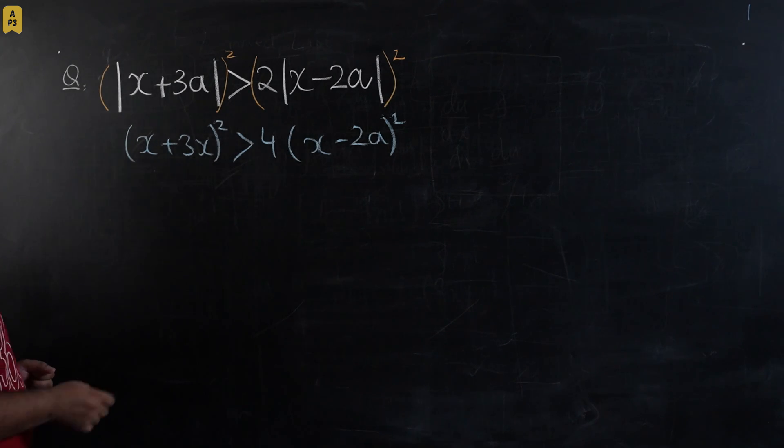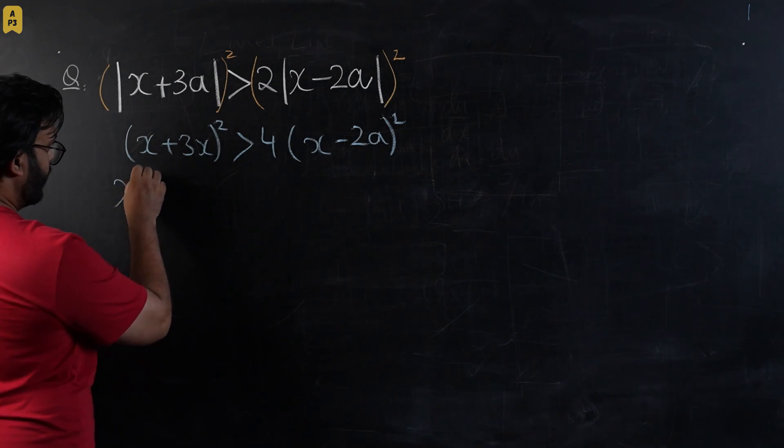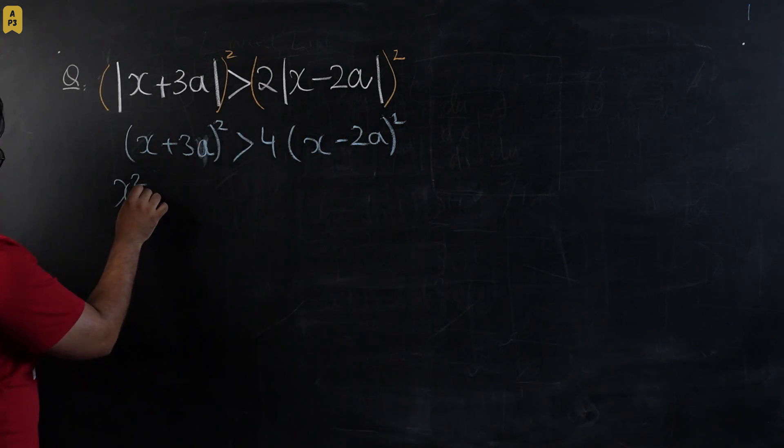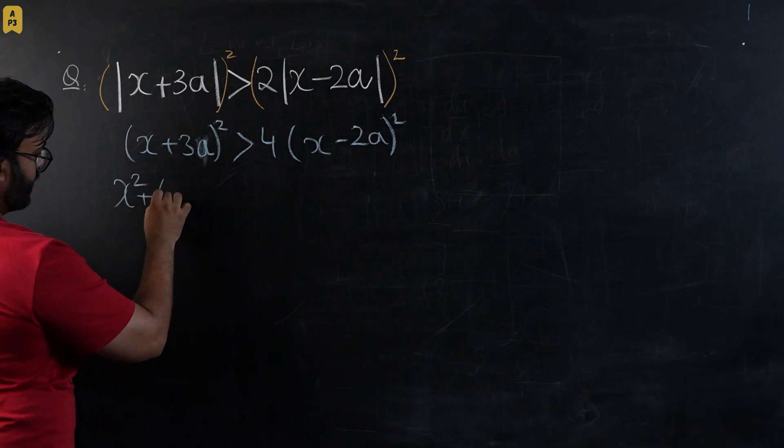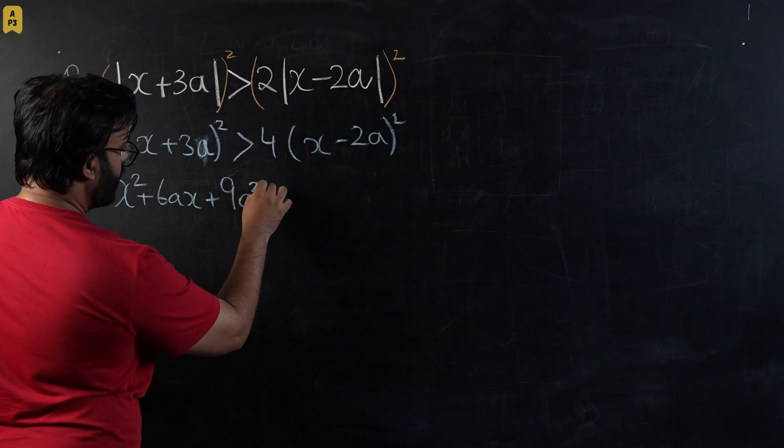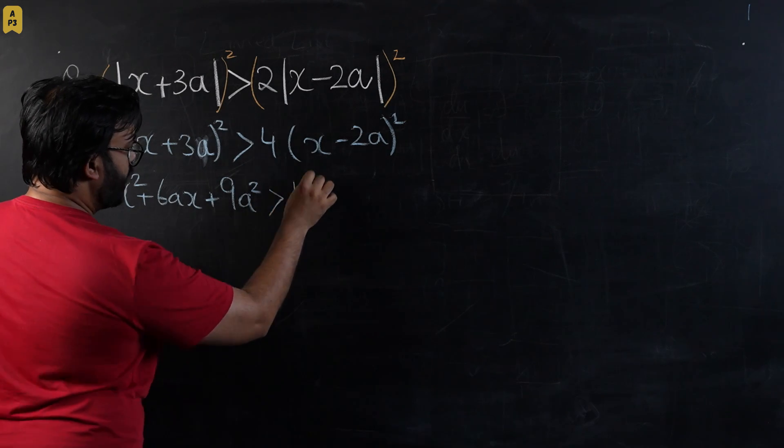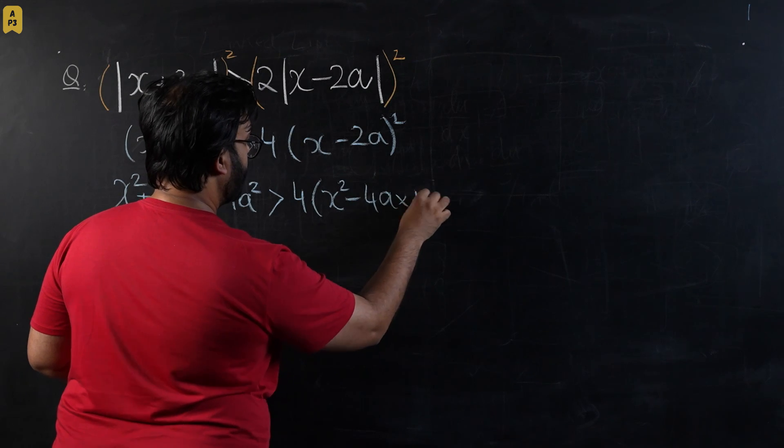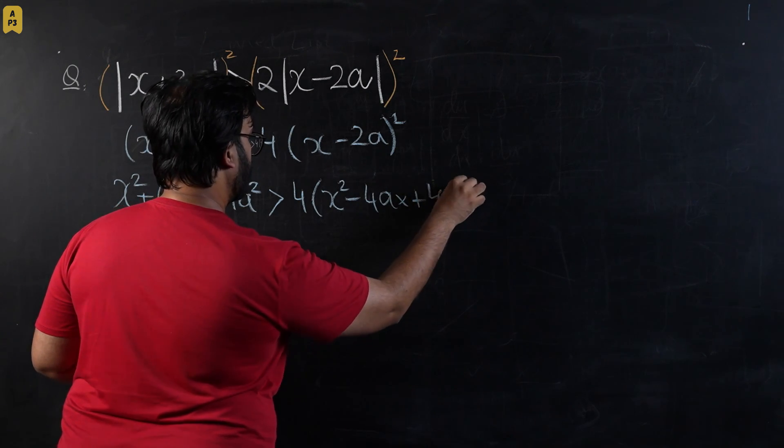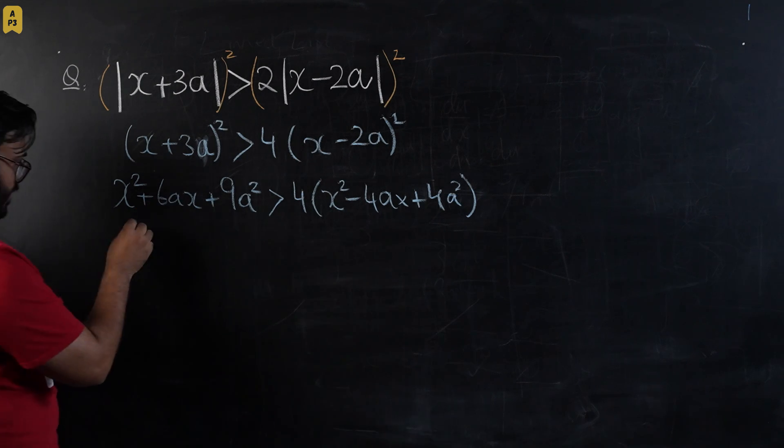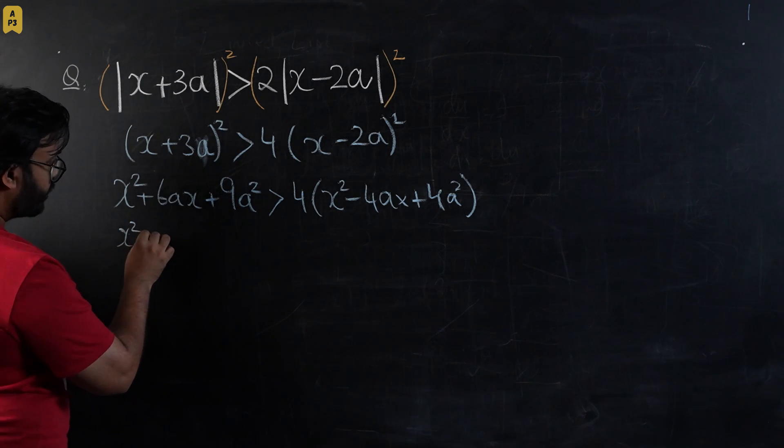This will become x² + 6ax + 9a² should be greater than 4 times x² - 4ax + 4a². So this is our final expansion, let's expand it further.